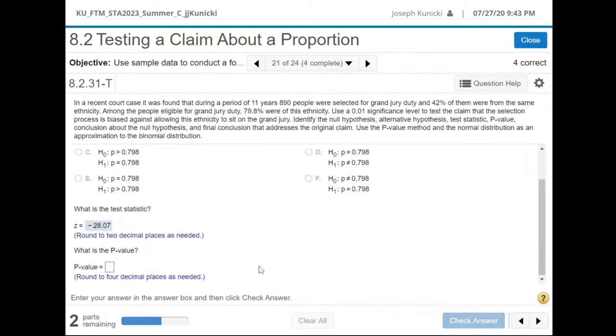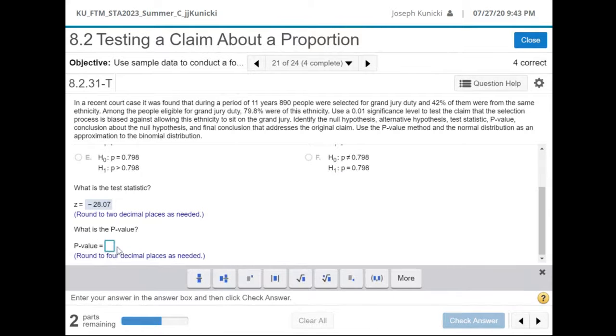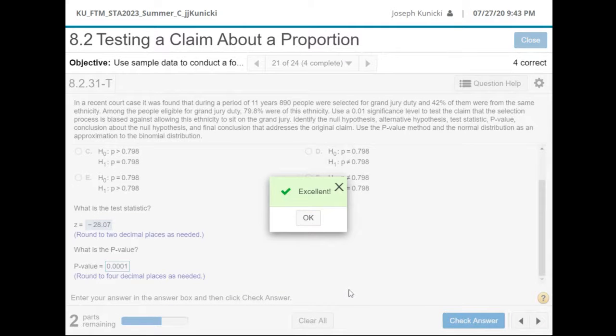Okay, good job. And then the p-value, four decimal places. Let's take a chance and put 0.0001. It says less than that, but let's see if they give us credit. Yeah, you could have put zero all four zeros, but that's still really low.